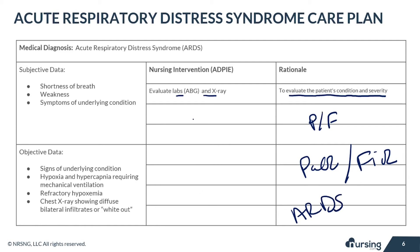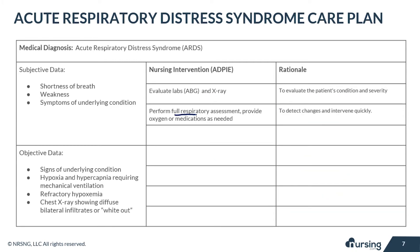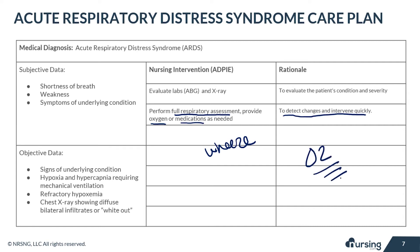The normal PaO2 is 60 to 100 mmHg on room air, or 21% FiO2. Perform a full respiratory assessment and provide oxygen or medications as needed to detect changes and intervene quickly. For example, if the patient is wheezing, a breathing treatment may help open the airways. Remember, oxygen is essential — if your patient is low, they need to be supplemented.